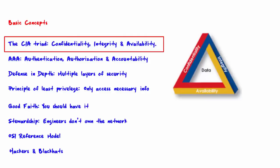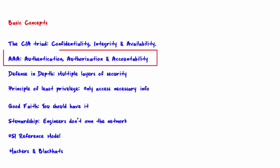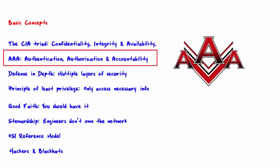The next concept is AAA — authentication, authorization, and accountability. Authentication means proving that you are who you say you are. So if you log in as Huckleberry and you produce Huckleberry's password, then the system will likely authenticate you.